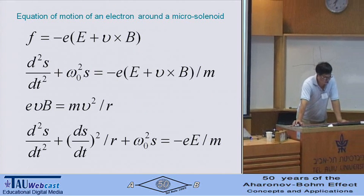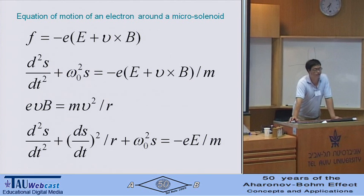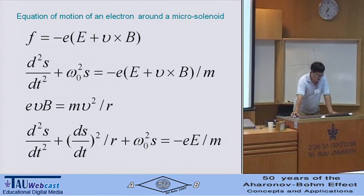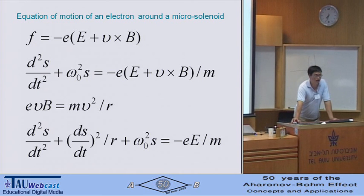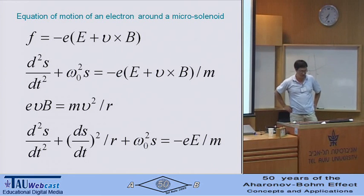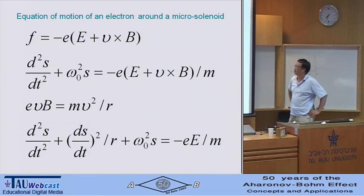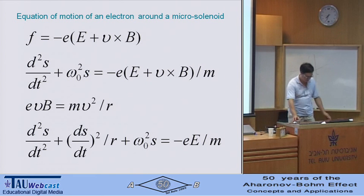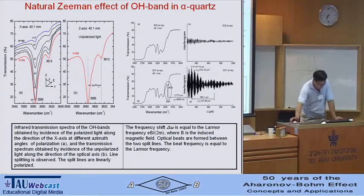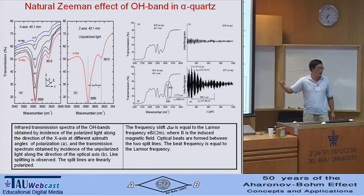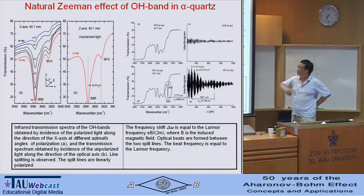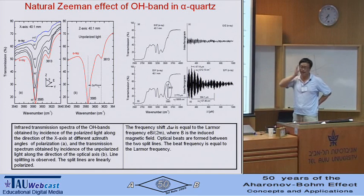Because of the induced magnetic field along the optical axis, the motion of the electron in the optically active medium is affected by the Lorentz force. In this case, we see that the differential equation is a nonlinear equation. This magnetic field also causes the Zeeman effect in alpha quartz.